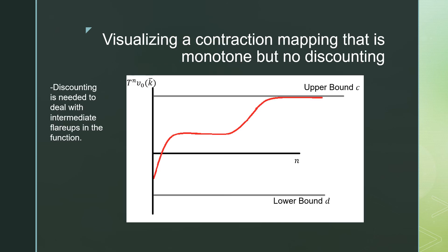In terms of visualizing a contraction mapping that is monotone but not discounted, we have to take into account first the fact that this is a set of bounded functions, meaning that there are bounds on these functions, but we can have really anything going on in the intermediate part.